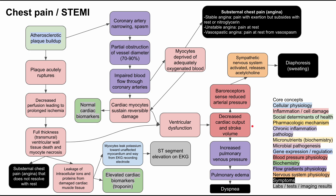Additionally, when you have decreased cardiac output and stroke volume, baroreceptors sense your reduced arterial pressure — your blood pressure is low enough that your body recognizes it. Your body's response is to activate the sympathetic nervous system, which releases acetylcholine. This can trigger sweating, also called diaphoresis, which is another common symptom when somebody is having an ST elevated myocardial infarction.